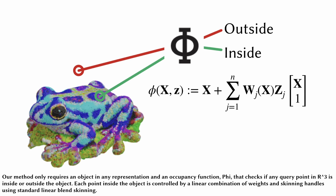Our method only requires an object in any representation and an occupancy function phi that checks if any query point in R3 is inside or outside the object. Each point inside the object is controlled by a linear combination of weights and skinning handles using standard linear blend skinning.